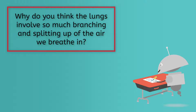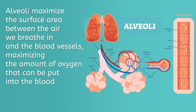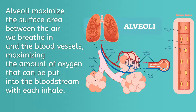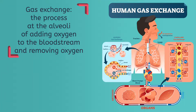If the lungs were just large, hollow sacs, only the relatively small portion of air at the edges of the lungs could interact with the blood vessels to send oxygen to the rest of the body. With these small alveoli, the lungs maximize the surface area between the air we breathe in and the blood vessels, maximizing the amount of oxygen that can be put into the bloodstream with each inhale, and also maximizing the amount of carbon dioxide waste that can be removed with each exhale. At the alveoli, the process of pushing oxygen into the capillaries and taking carbon dioxide out of the capillaries is called gas exchange.